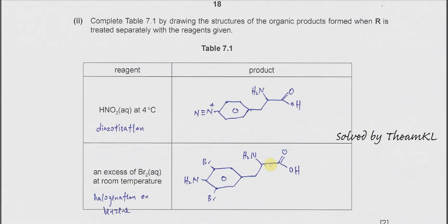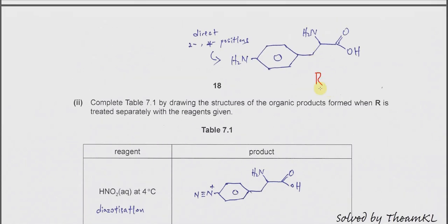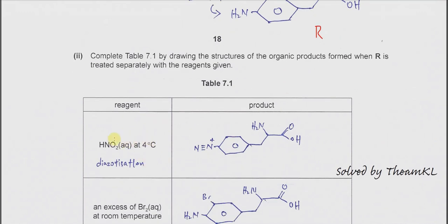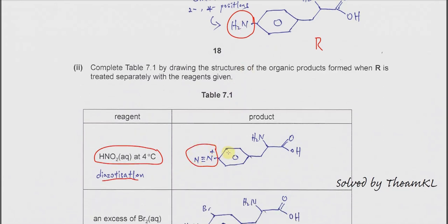Part C table: Draw the structure of organic products when R is treated with the given reagents. First, R treated with HNO₂ at 4°C — this is the condition for diazotization. The phenylamine (NH₂) group converts to a benzene diazonium ion (N≡N⁺). The rest of the structure does not change.